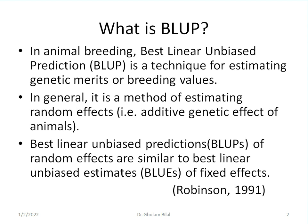So, what is BLUP? In animal breeding, it is best linear unbiased prediction. It is a technique for estimating genetic merits or breeding values of animals. In general, it is a method of estimating random effects, which are specifically called additive genetic effect of animals. Best linear unbiased predictions of random effects are similar to best linear unbiased estimates of fixed effects.